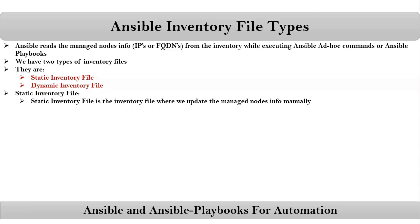A static inventory file is the inventory file where we update the managed nodes info manually. Managed nodes info means either IPs or FQDNs. So as of now, whatever inventory files we have created, all those are static inventory files because we are always manually updating IPs in the inventory file. Then what about a dynamic inventory file?